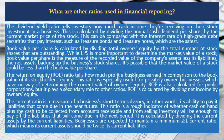What are other ratios used in financial reporting? The dividend yield ratio tells investors how much cash income they're receiving on their stock investment in a business. This is calculated by dividing the annual cash dividend per share by the current market price of the stock. This can be compared with the interest rate on high-grade debt securities that pay interest, such as treasury bonds and treasury notes, which are the safest.